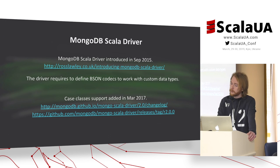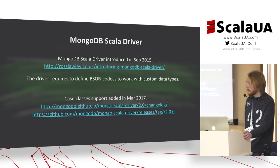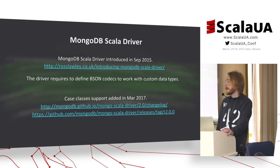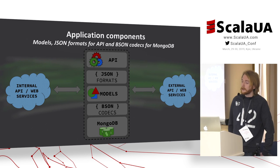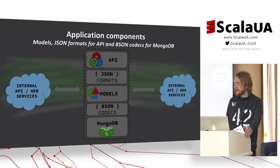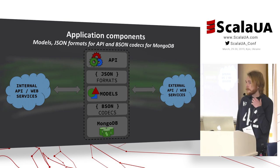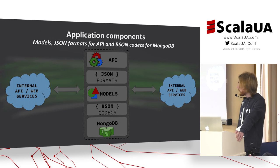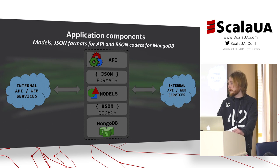By default, the driver provides support only for BSON documents, and it may be necessary to implement additional BSON codecs to successfully work with custom user data types. Usually JSON formats should be implemented to serialize models to REST API requests and responses. In addition, BSON codecs should be implemented to save these models to MongoDB.